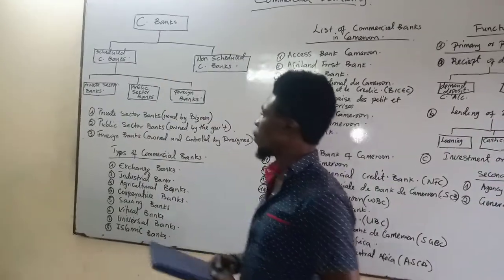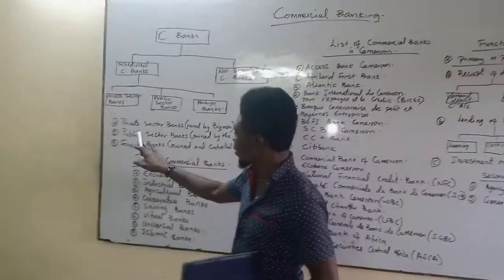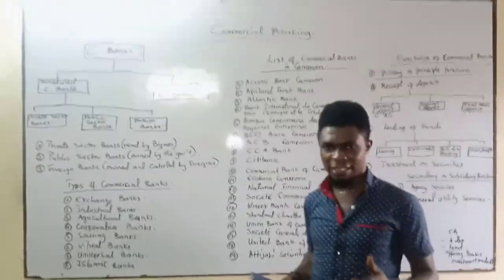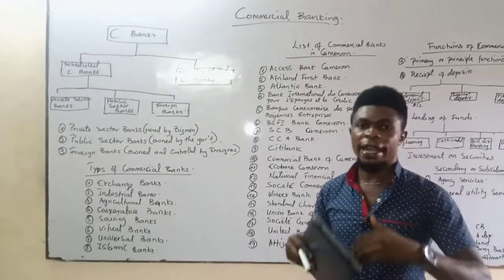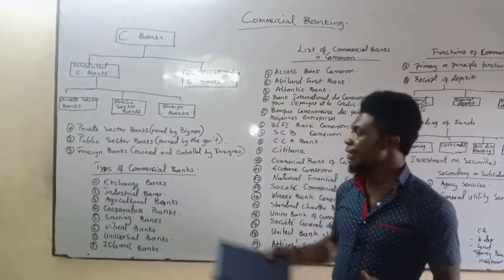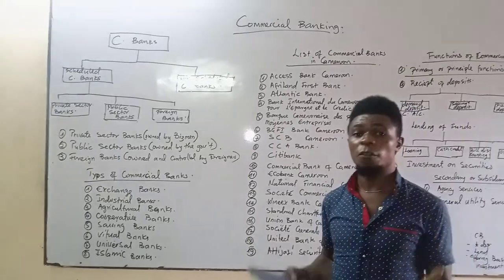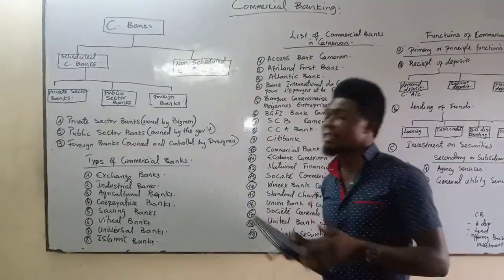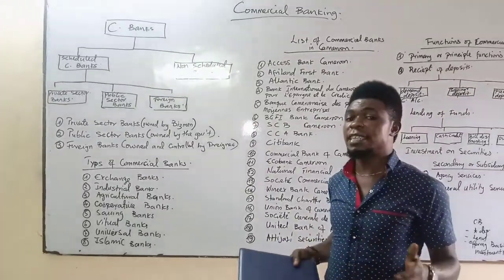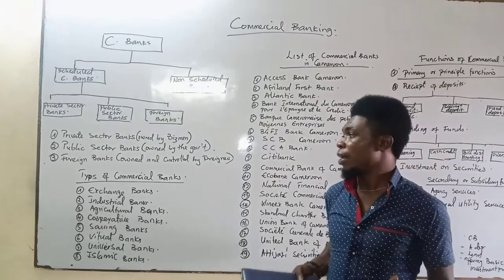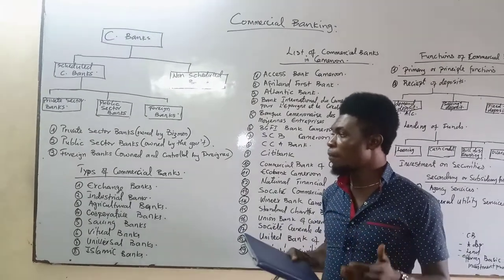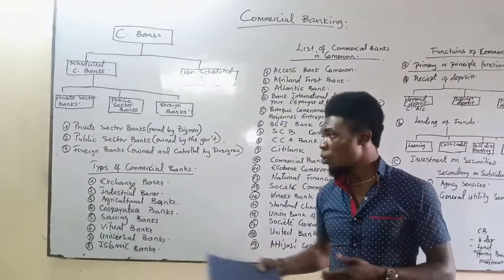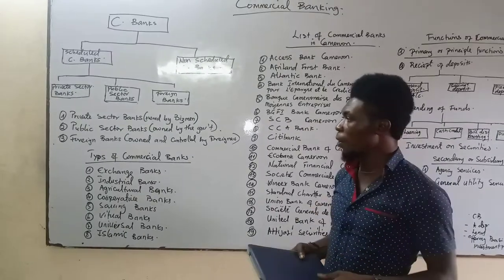The next category of commercial banks are public sector banks. These are commercial banks that are owned and managed by the government. These banks are not allowed to maximize profit, unlike private sector banks — their main objective is not to maximize profit. We generally refer to them as public sector banks, and we shall be seeing samples of them in the course of our lecture.